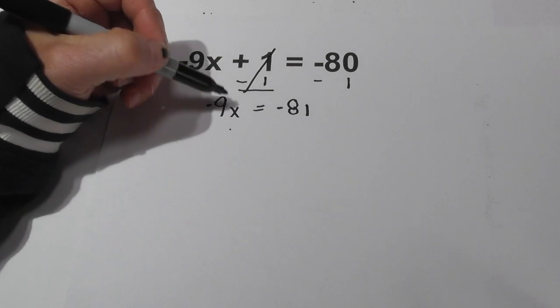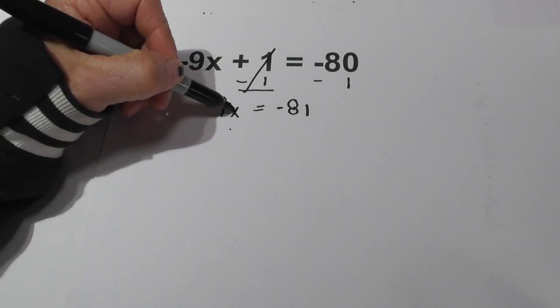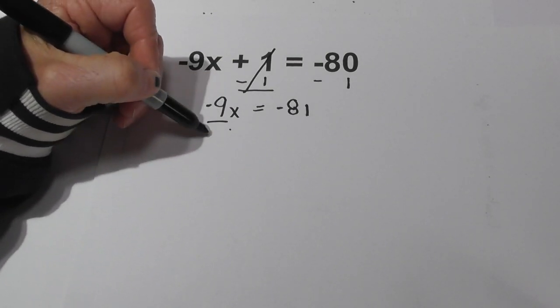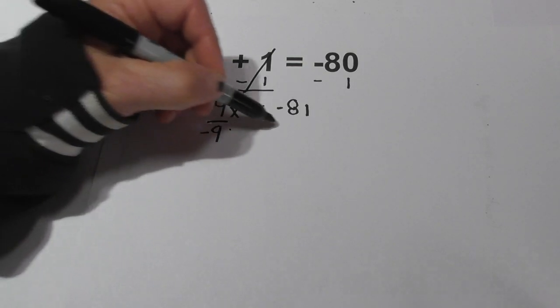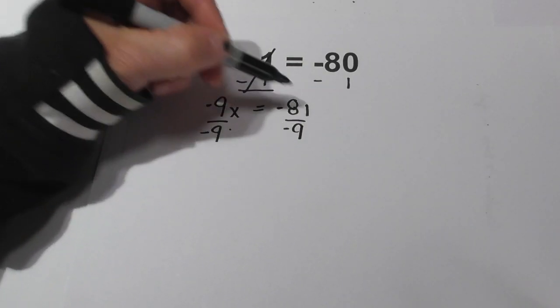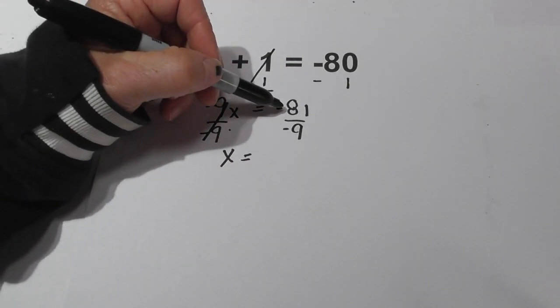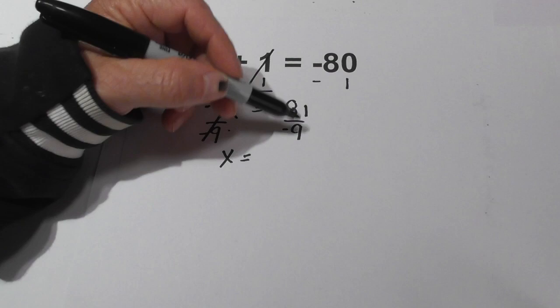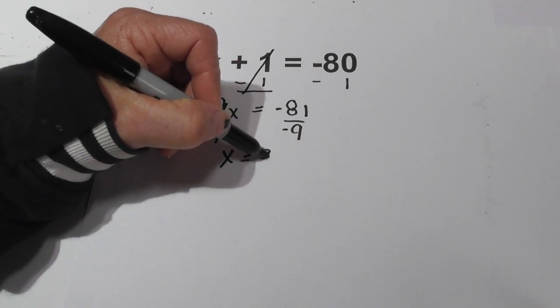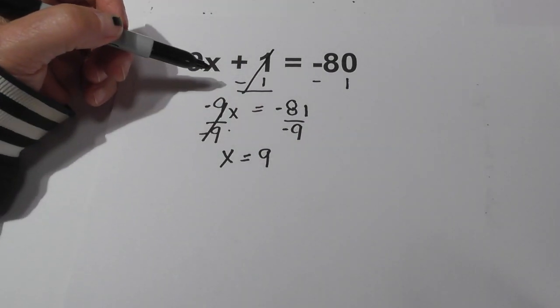So now to isolate the x, I need to complete an opposite operation. I'm going to divide both sides by negative 9. These cancel, bring down the x equals. A negative 81 divided by negative 9 is a positive 9, because 9 times 9 is 81.